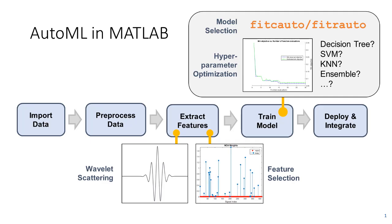AutoML in MATLAB delivers optimized models in just three steps. First, you convert raw sensor data to the features machine learning needs as input using wavelet scattering.